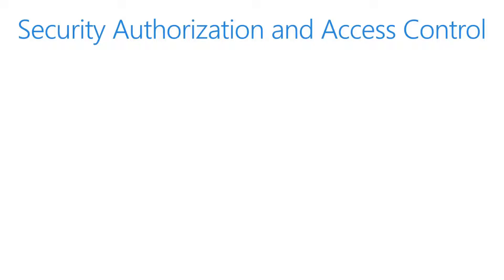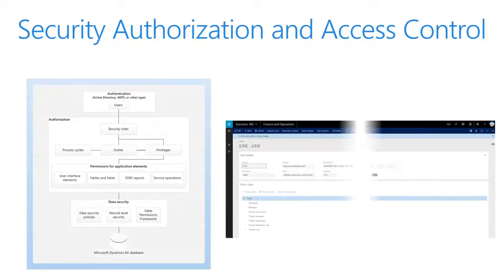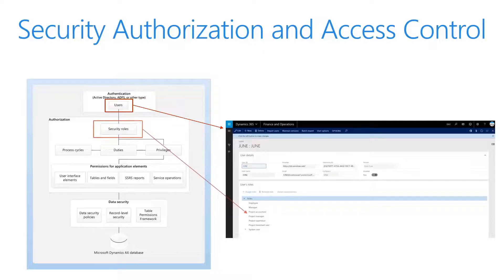Let's take a look at security authorization and access control. All users must be assigned at least one security role in order to use Microsoft Dynamics 365 for Finance and Operations. The security roles assigned to a user determine the duties the user can perform and the parts of the user interface they can view. Administrators can apply data security policies to limit the data that users in a role have access to. Here on the user screen we can see June, for example, and the roles assigned to her — she's assigned to the employee manager role and the project accountant role. This is where we can assign roles in the user interface.